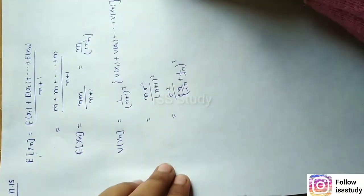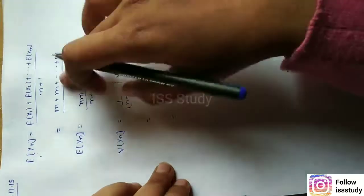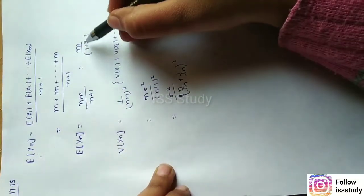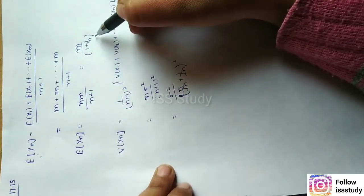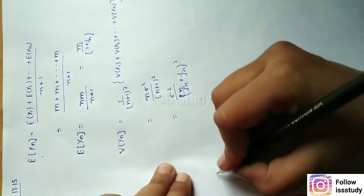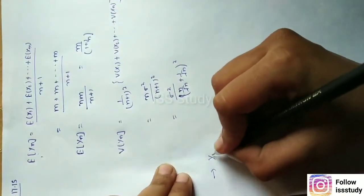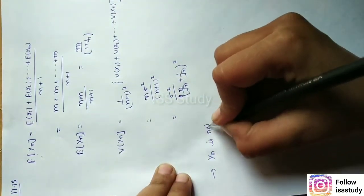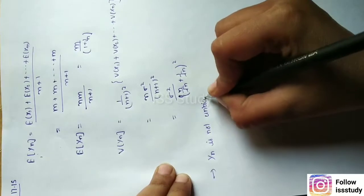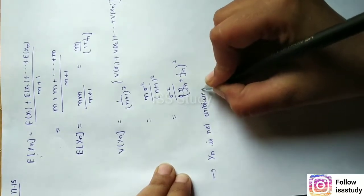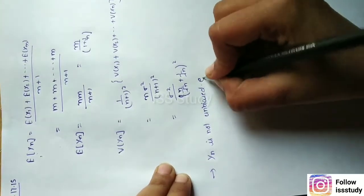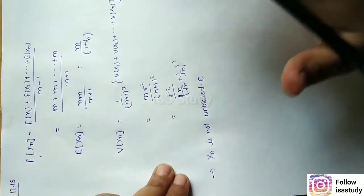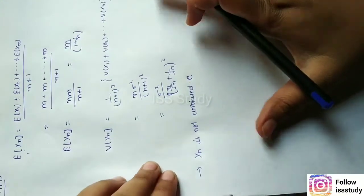Since the expectation of yn equals nm/(n+1), which equals m/(1 + 1/n), this does not estimate the population parameter m directly. Therefore, yn is NOT an unbiased estimator.